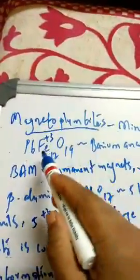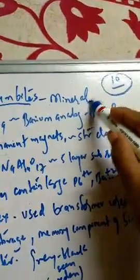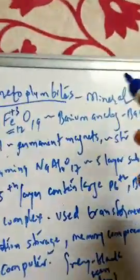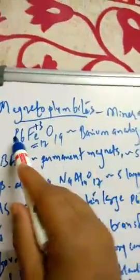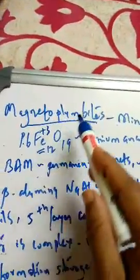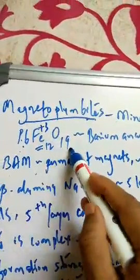So what is this magnetoplumbite? Magneto itself says that iron. This is nothing but the minerals obtained in the rocks as a mineral. The main composition of this magnetoplumbite is lead magneto and plumb, plumbite means lead. So FeO9.